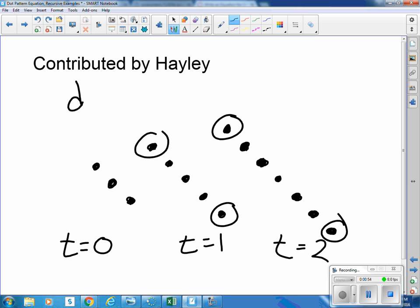So the number of dots is equal to two times the time. How many do we have to start with? At time zero we had three.